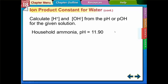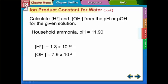For ammonia with a pH of 11.9, take 10 to the negative 11.9 to get the H+ concentration, and 10 to the negative 2.1 to get the OH- concentration — since pOH = 14 minus 11.9 = 2.1. Stop the video and check if you can do this on your calculators.